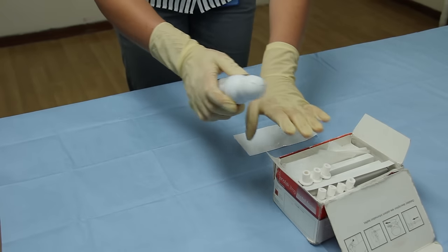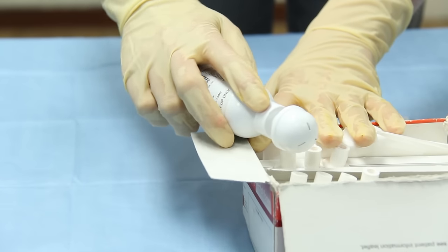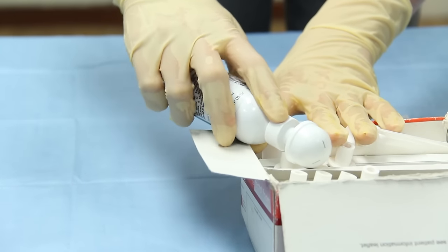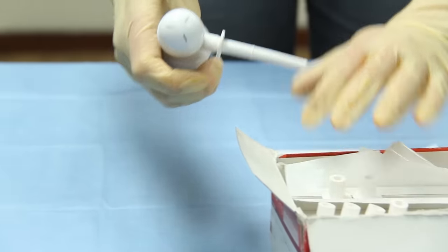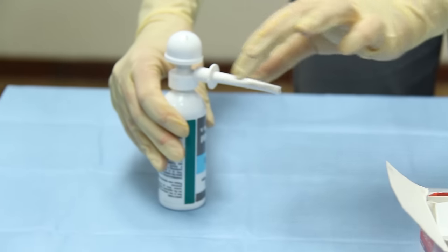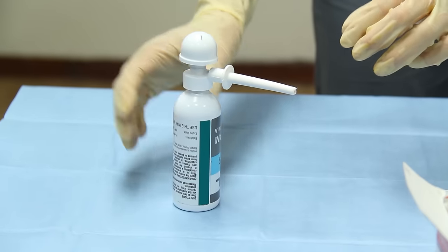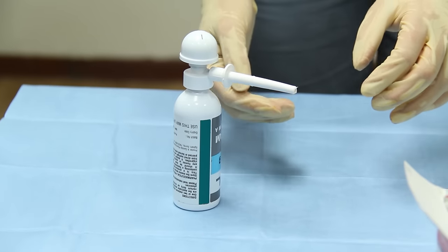So what they need to do is insert the disposable applicator on and pull it out. This applicator contains lubricant on the end so it makes it easier for insertion into the back passage.